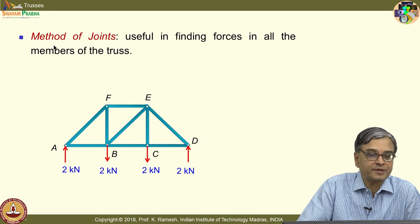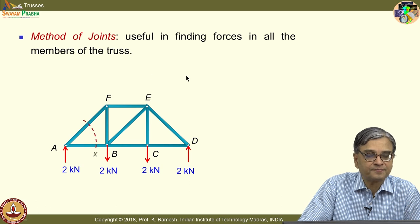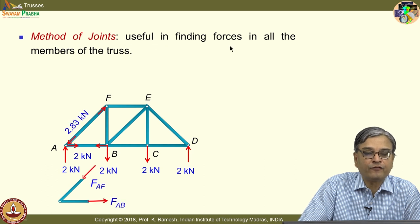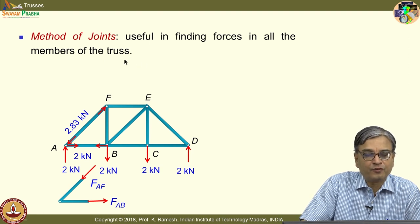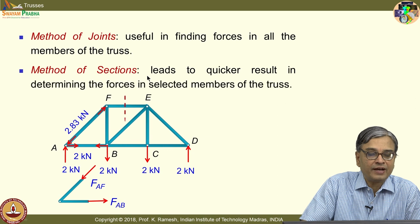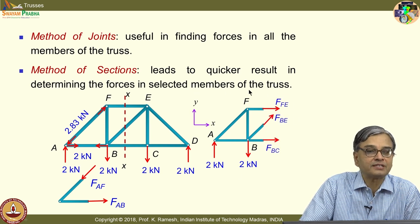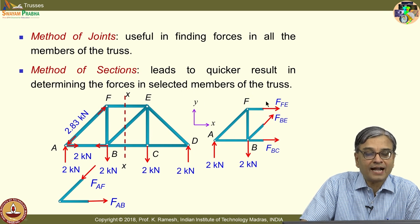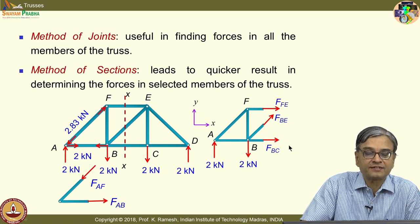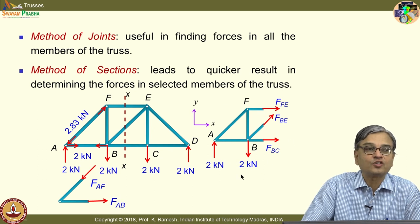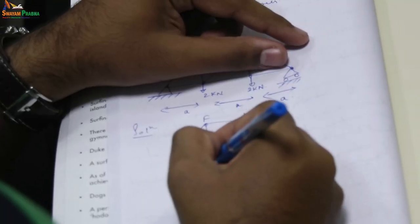Here is a bird's eye view of what is the method of joints. Later on, we will spend time learning the details. Method of joints is useful in finding forces in all the members of the truss. Method of sections involves separating a section of the truss and then finding forces on selected members. The challenge is: what is the ideal section to use? In the method of sections, the force system is non-concurrent.